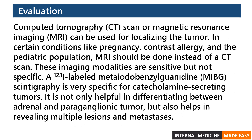CT scan or MRI can be used for localizing the tumor. In certain conditions like pregnancy, contrast allergy, and in the pediatric population, MRI should be done instead of a CT scan. These imaging modalities are sensitive but not specific. MIBG scintigraphy is very specific for catecholamine-secreting tumors — it helps differentiate between adrenal and paraganglionic tumors, and also helps reveal multiple lesions and metastases.